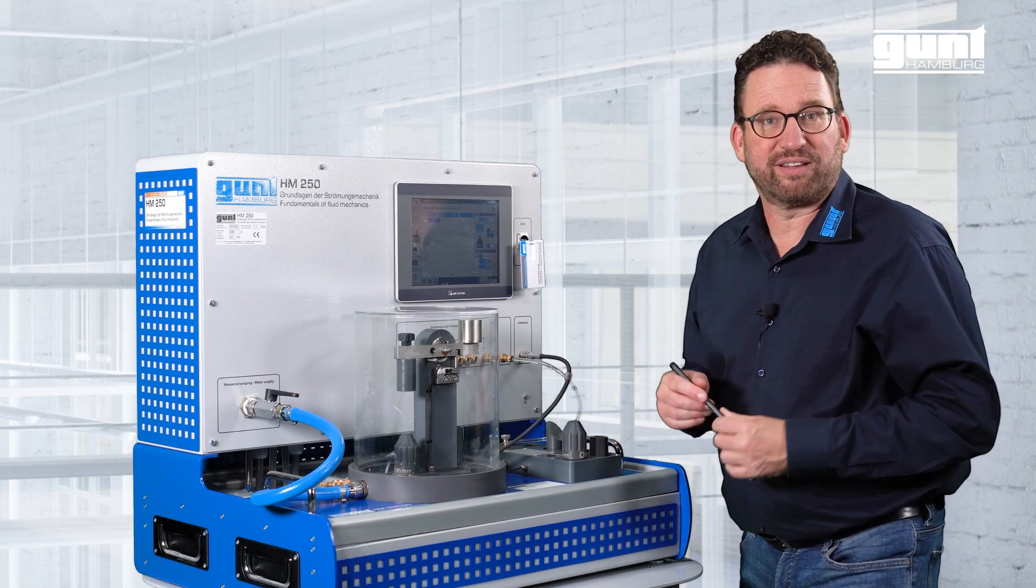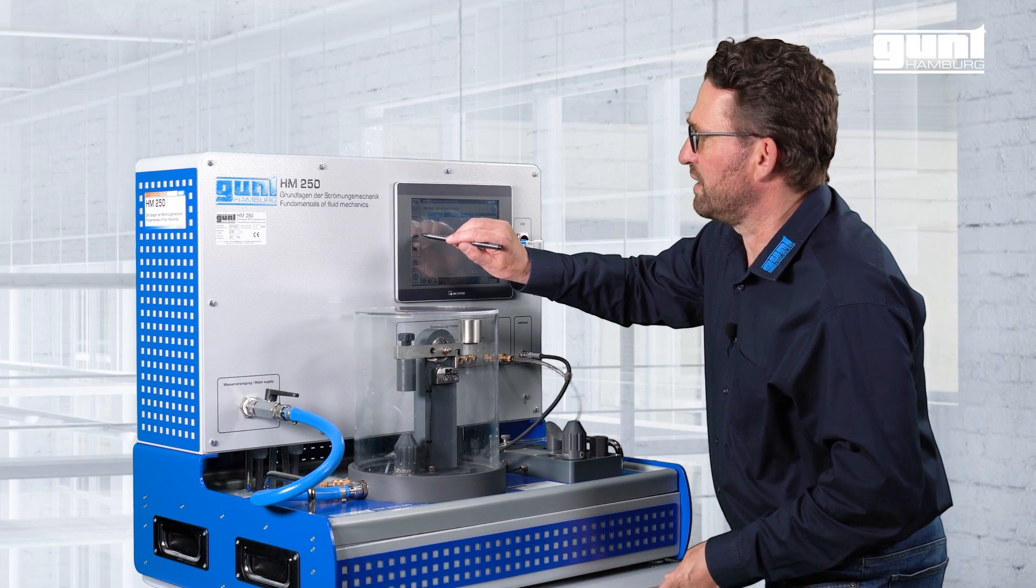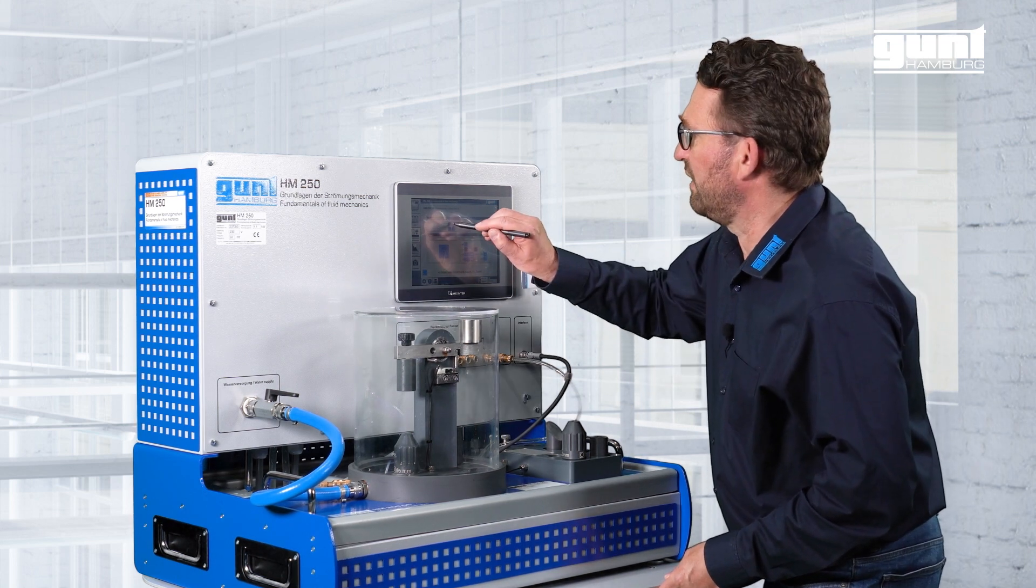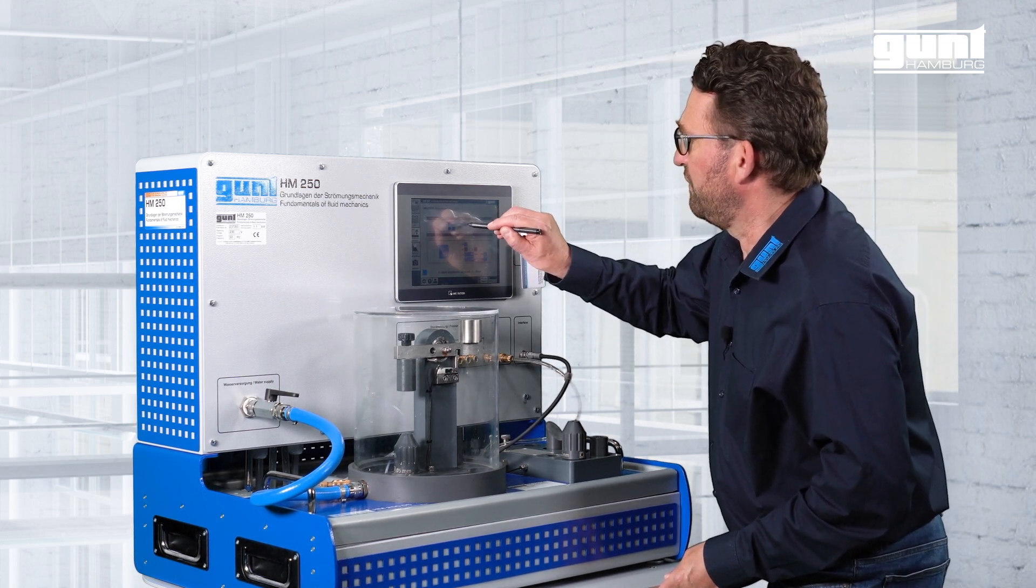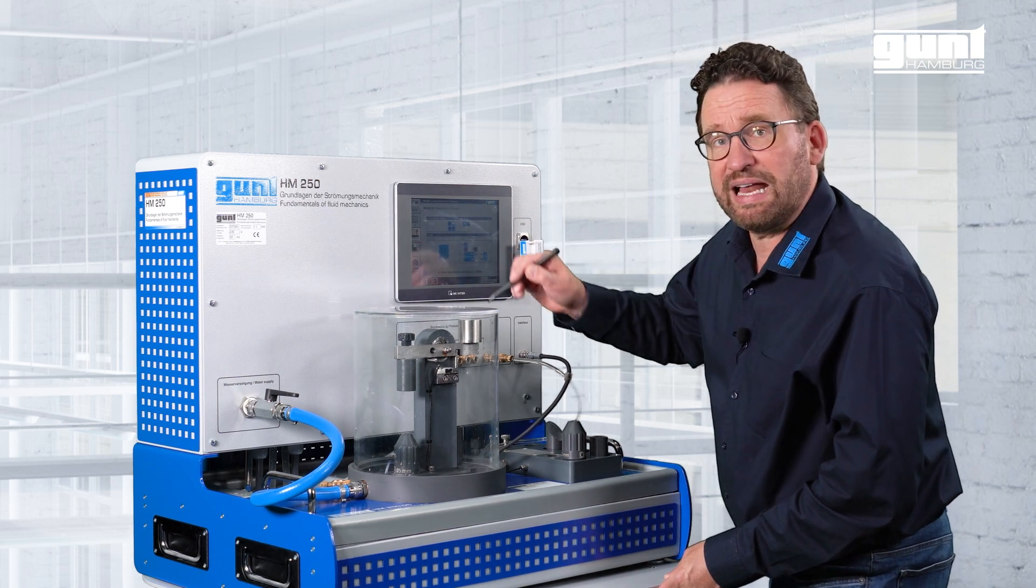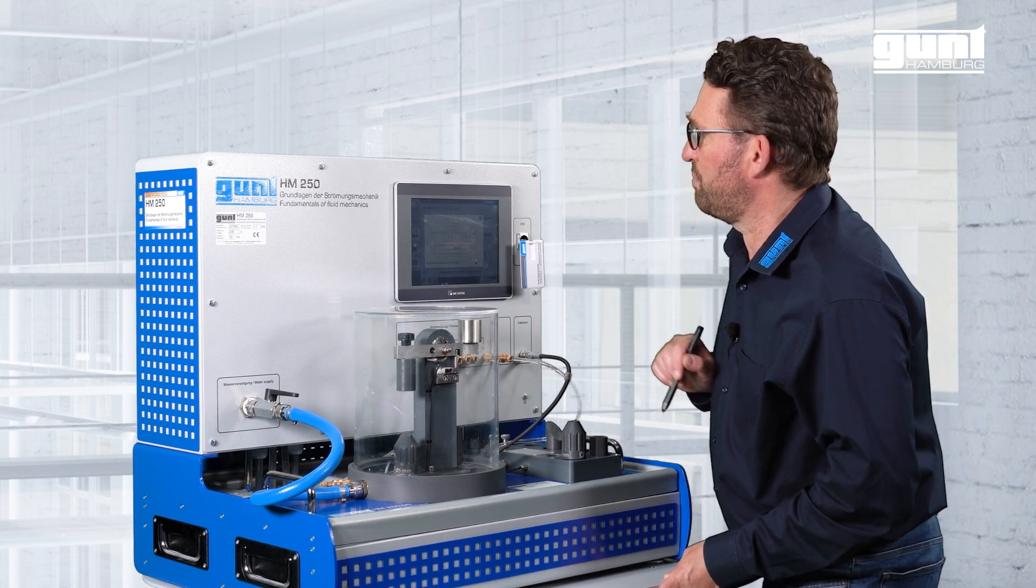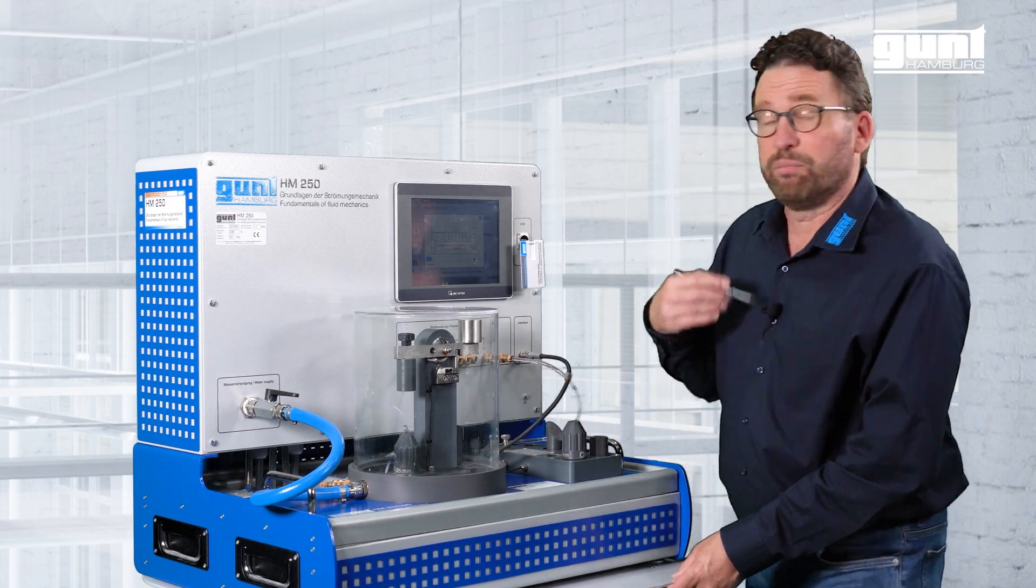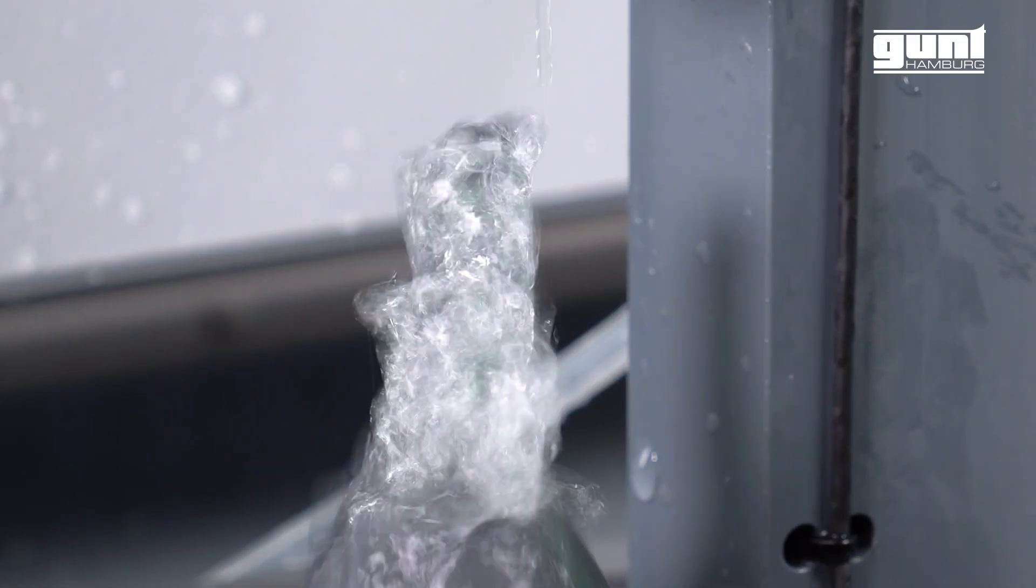In order to start the experiment we change into the experiment preparation screen where we select the appropriate deflector and nozzle side and after that we start the bleeding by pressing this button. The bleeding process is carried out fully automatically by the unit.